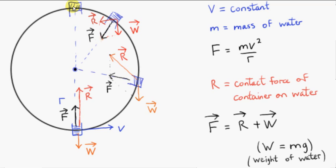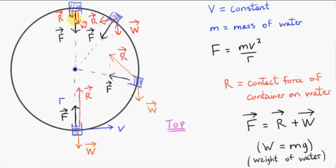Let's consider the water when it reaches the top of the circle, assuming that it does reach the top of the circle and the water hasn't fallen out. The resultant force has the same magnitude mv squared over r, this time pointing towards the center of the circle — which is always pointing towards the center of the circle. The weight vector is now in the same direction as the resultant force vector. Since the weight vector plus vector R adds up to vector F, vector R must be in the same direction as vector W and vector F. So the vector sum is easy: we just add the magnitudes of R and W to get vector F. Let's write down that equation: the magnitude of R plus mg equals mv squared over r.